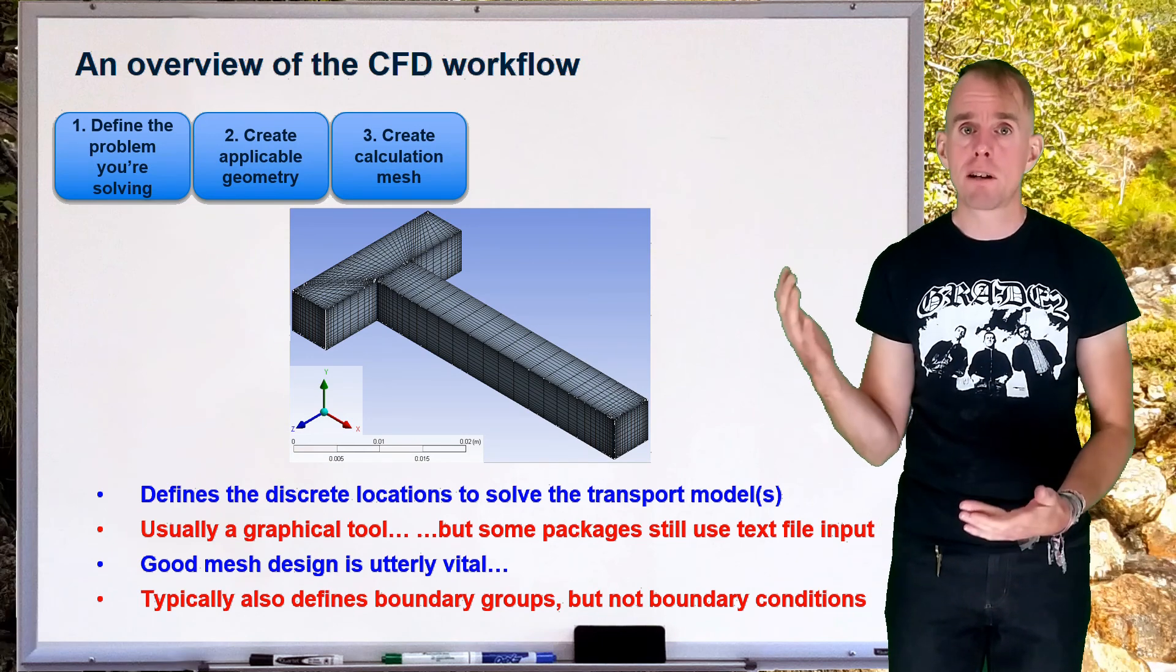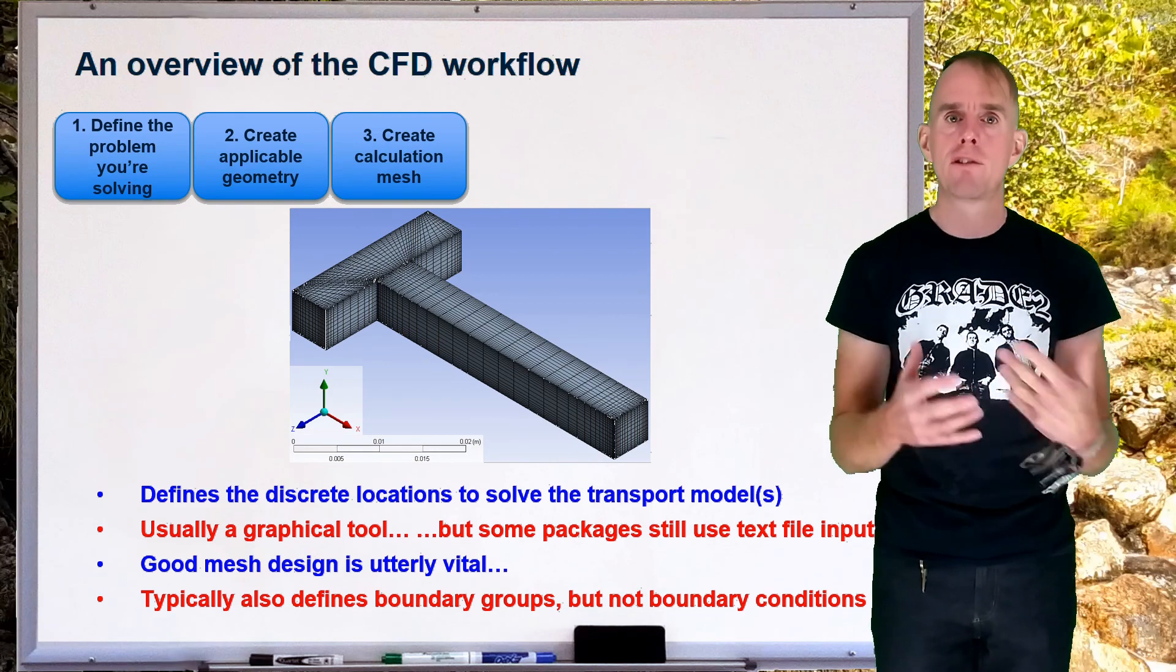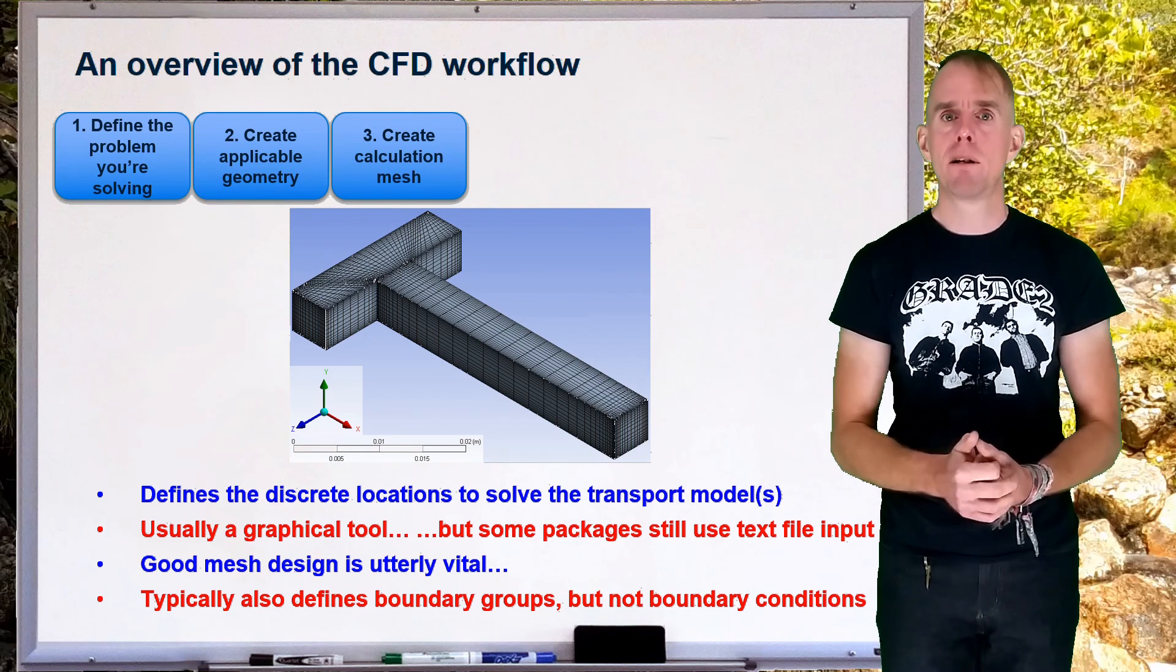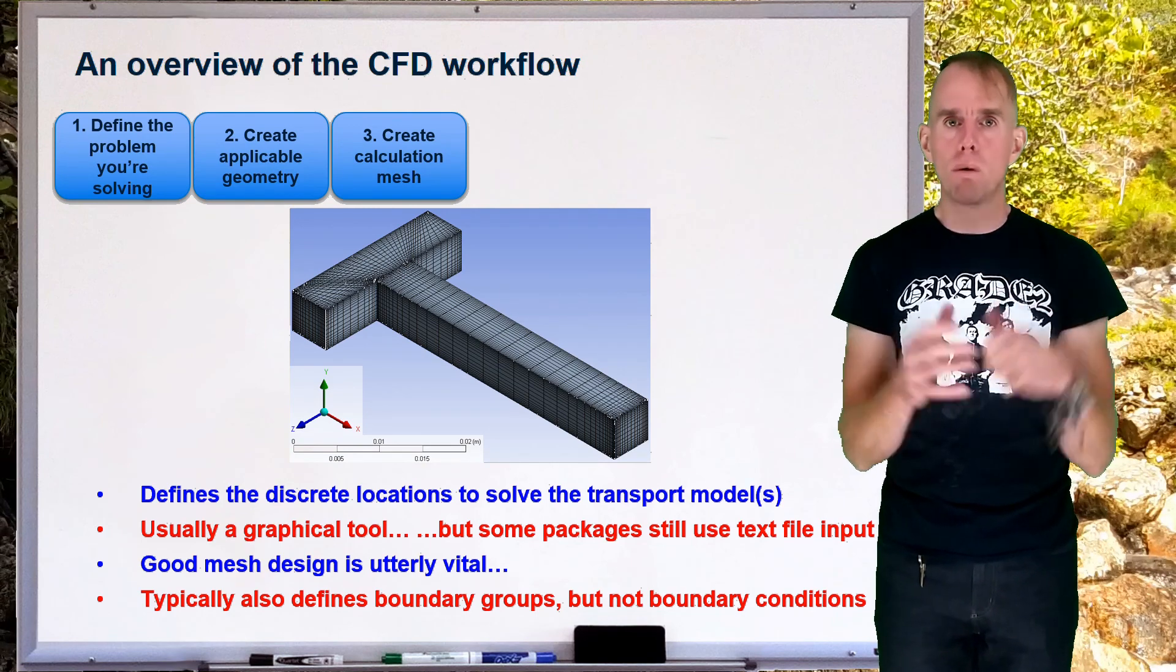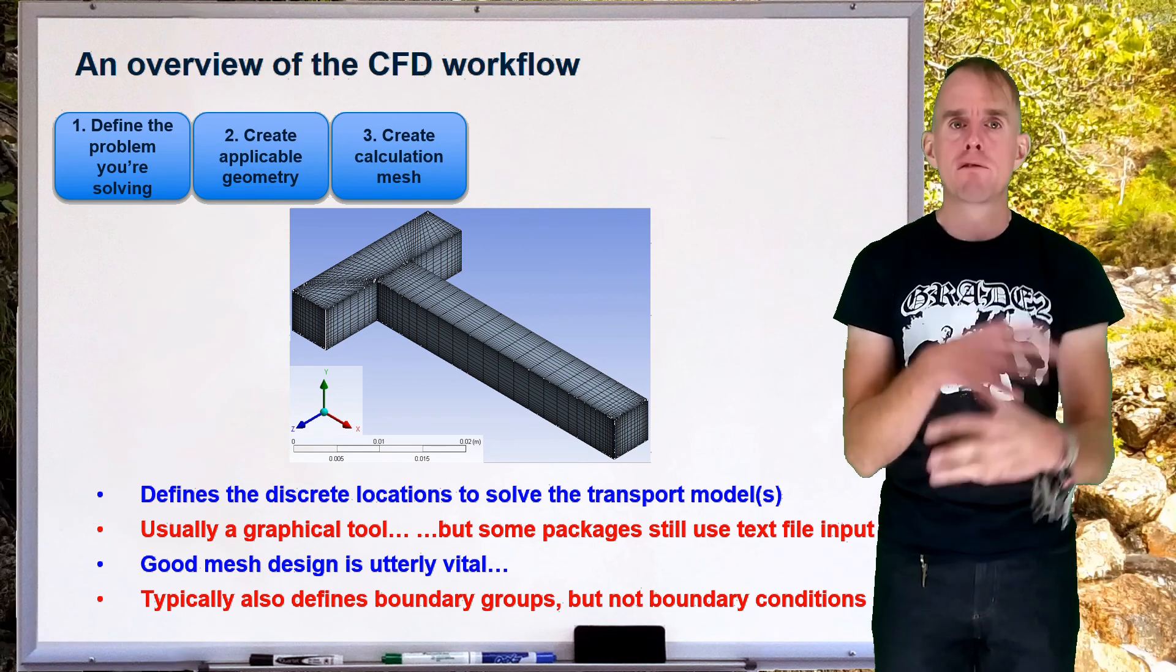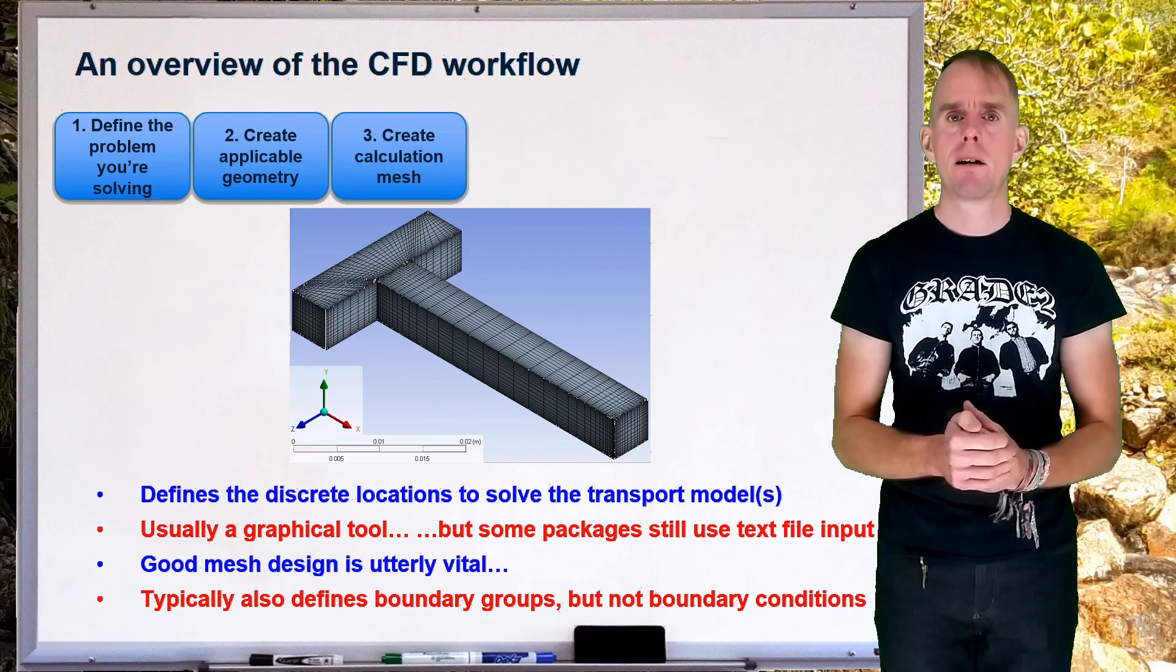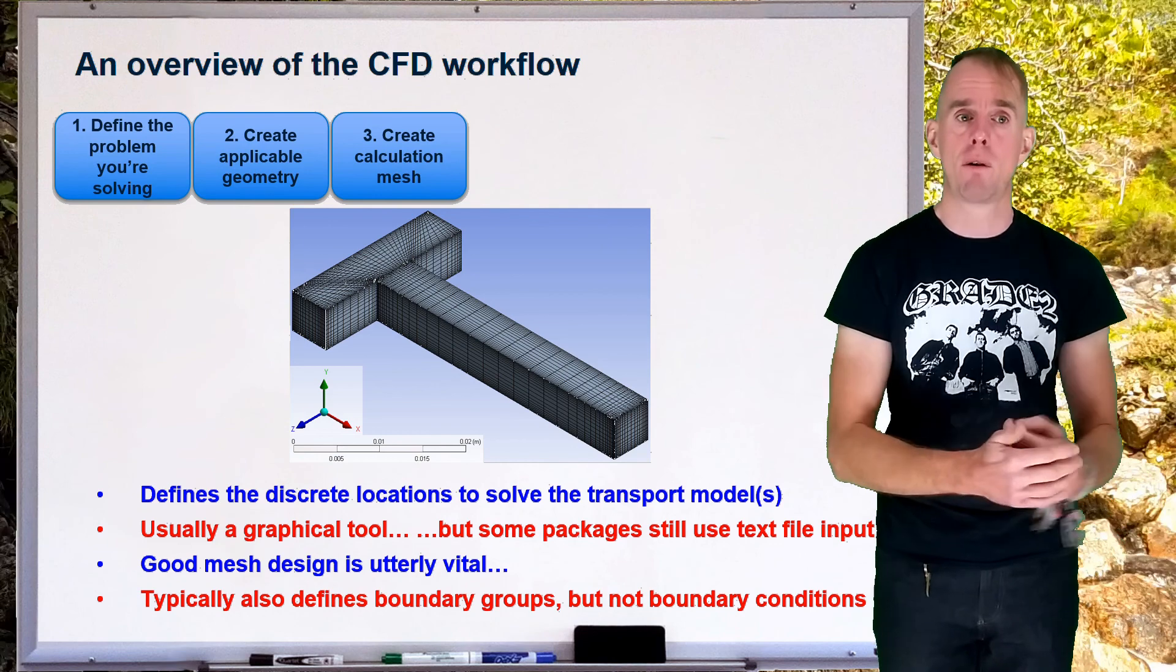When you're generating mesh, typically within some packages, you'll also be grouping together boundaries of the same nature. You won't be saying what those boundaries are at the moment. But you will be, for example, saying, well, all these boundaries are walls. Or all these boundaries will be defined as walls later on. This boundary is going to be defined as an outlet later on. These boundaries might be defined as inlets later on. So that brings us very neatly to our fourth step, which is defining what your boundary conditions are, what the physics is that you're trying to solve, and what physical properties are taken by the fluids that you are using within the simulation.